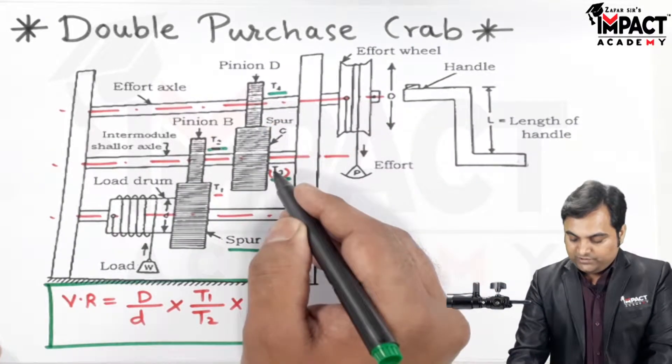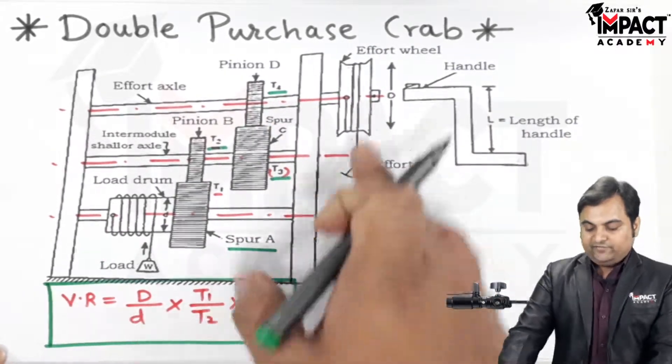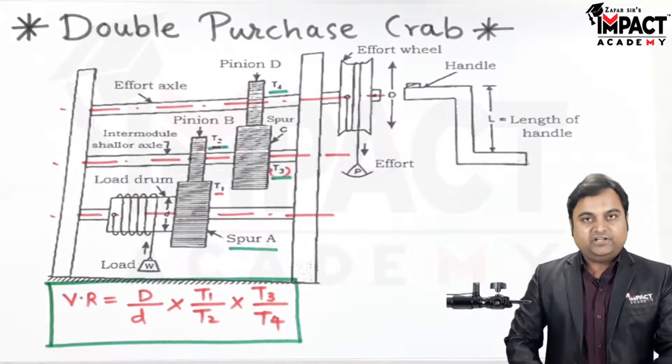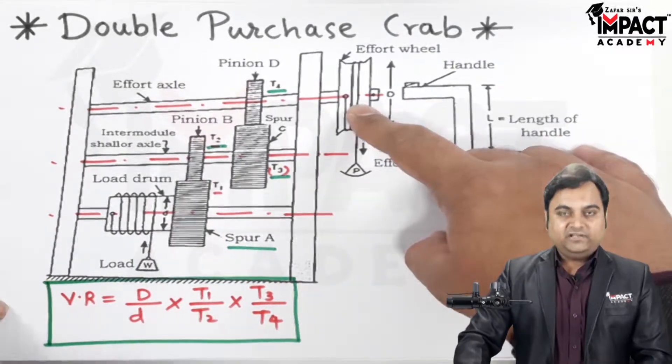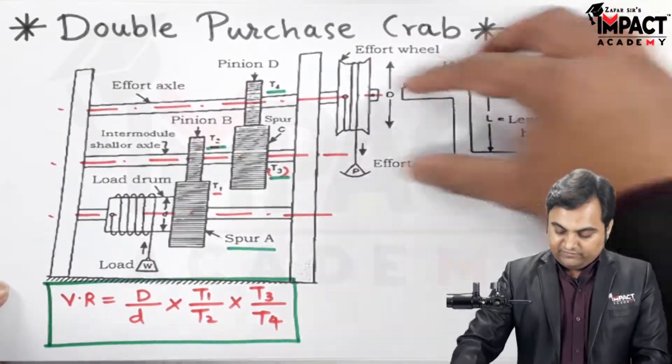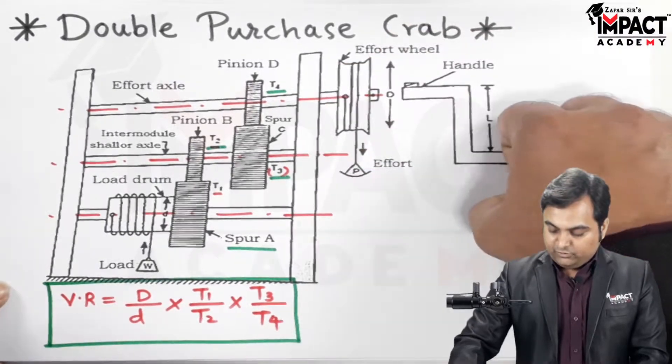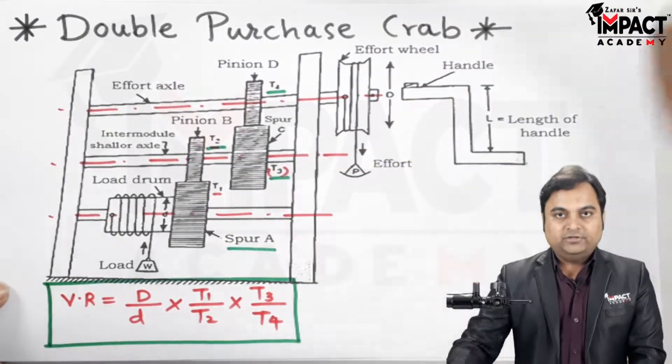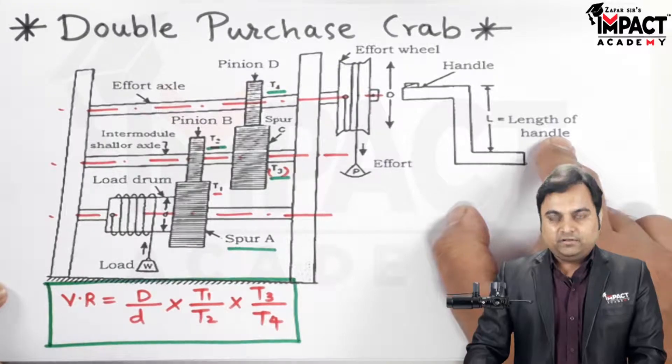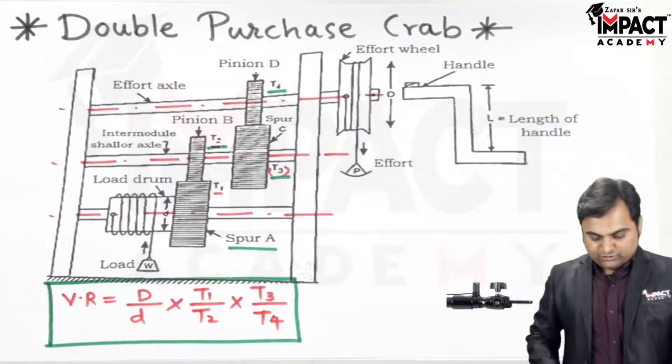Now instead of the effort wheel, if suppose we have an arrangement with a handle, so replacing the effort wheel with a handle which we grip and rotate, it is also called a crank. In that case the velocity ratio formula would be: